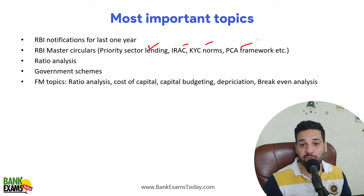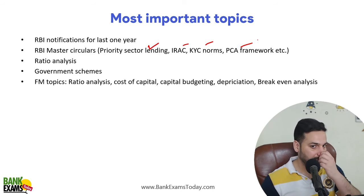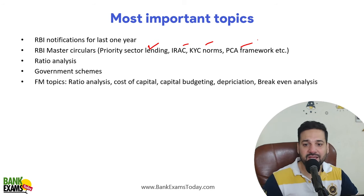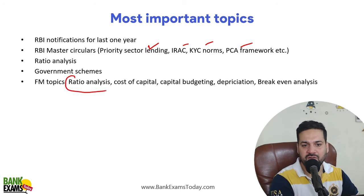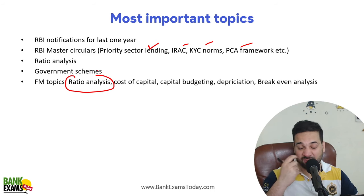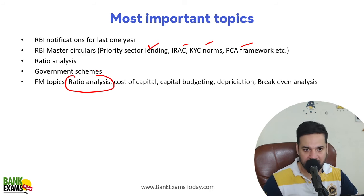And then FM topics — you will see a lot of questions from these. Ratio analysis is the most important topic, I would say it is more important than the first topic mentioned. After that, cost of capital is important, capital budgeting, depreciation, and break-even analysis. Among all FM topics, ratio analysis is the most important — the highest number of questions come from ratio analysis every year, then cost of capital, capital budgeting, depreciation, and break-even analysis.